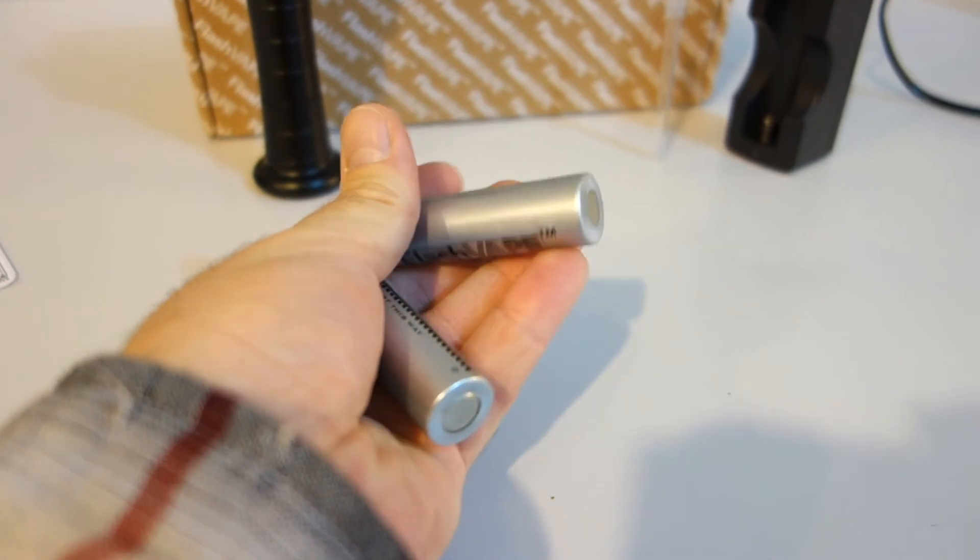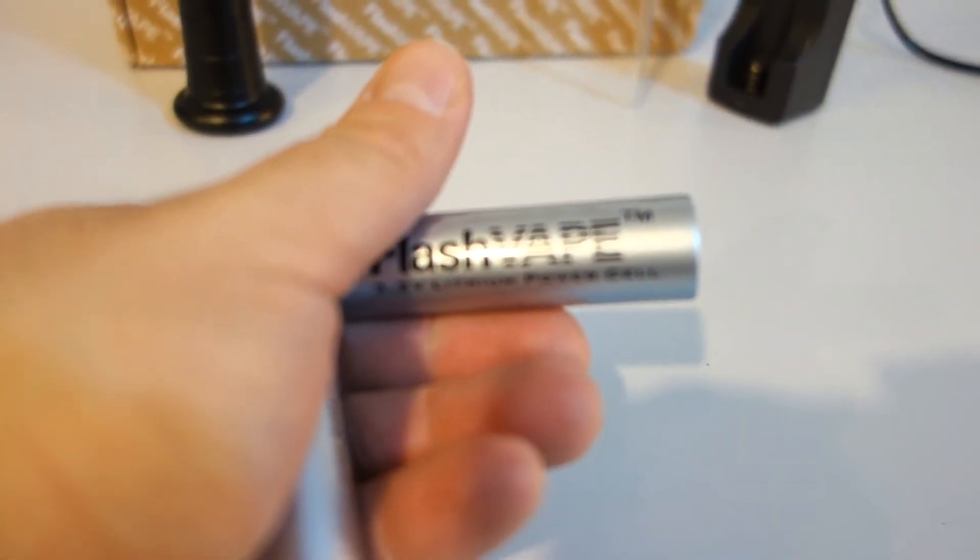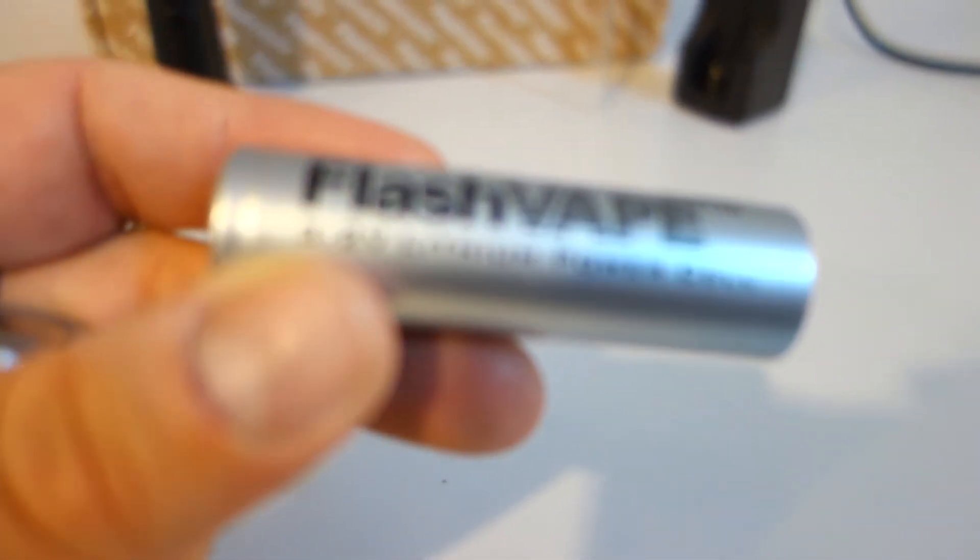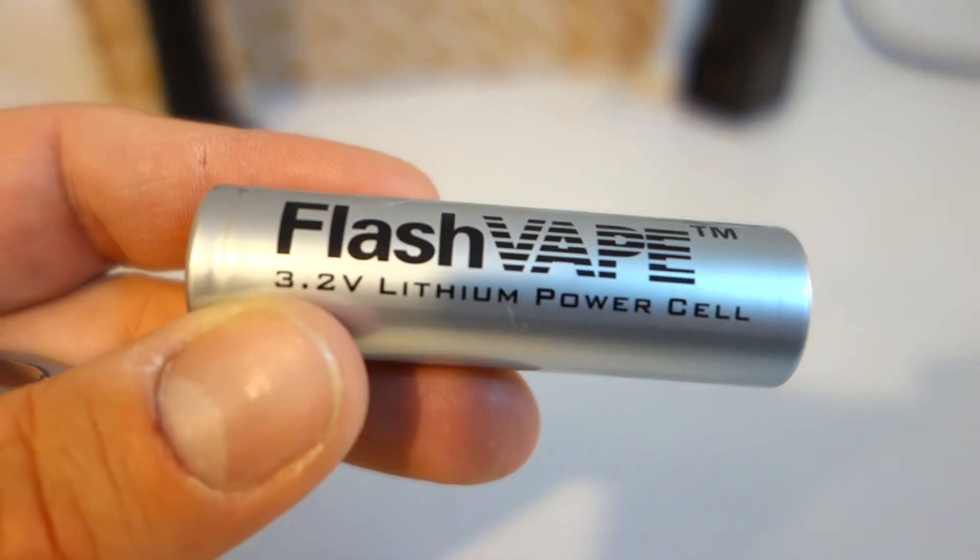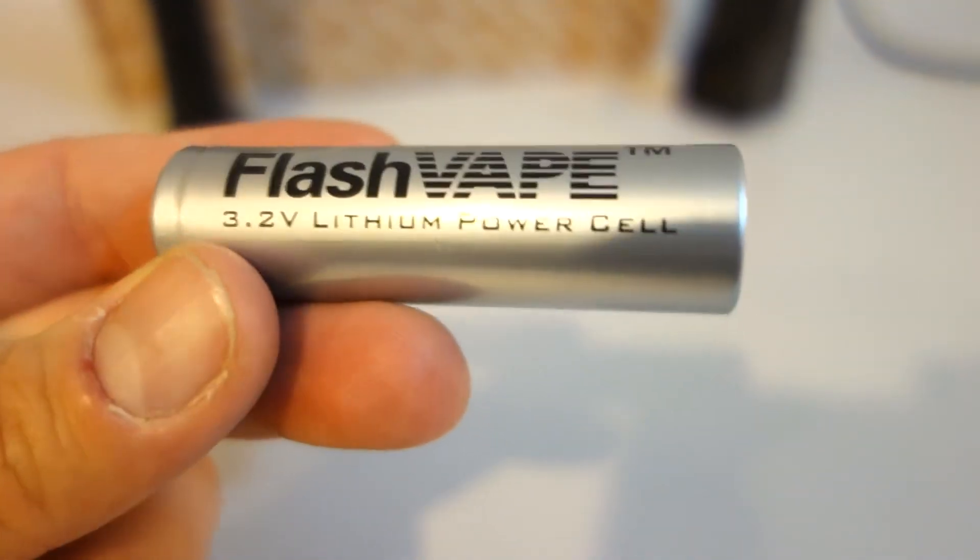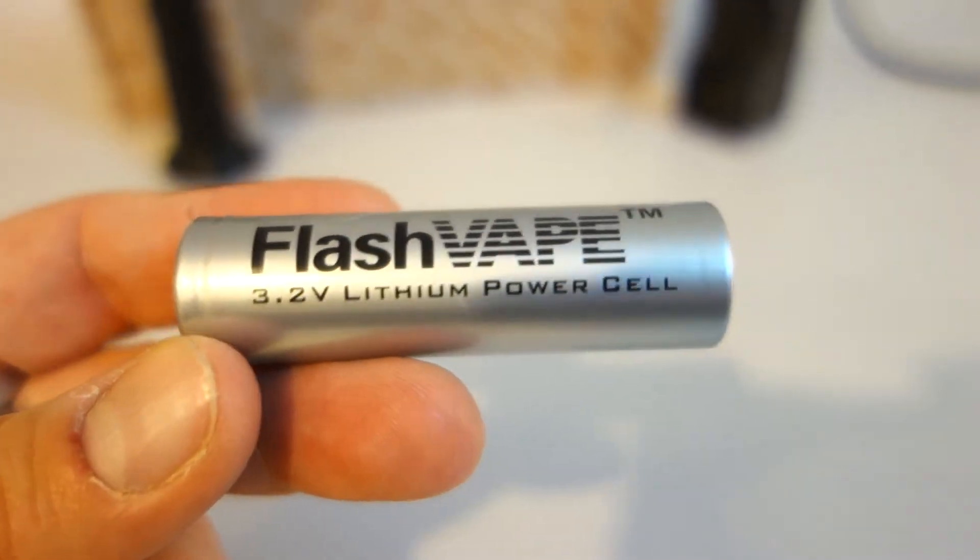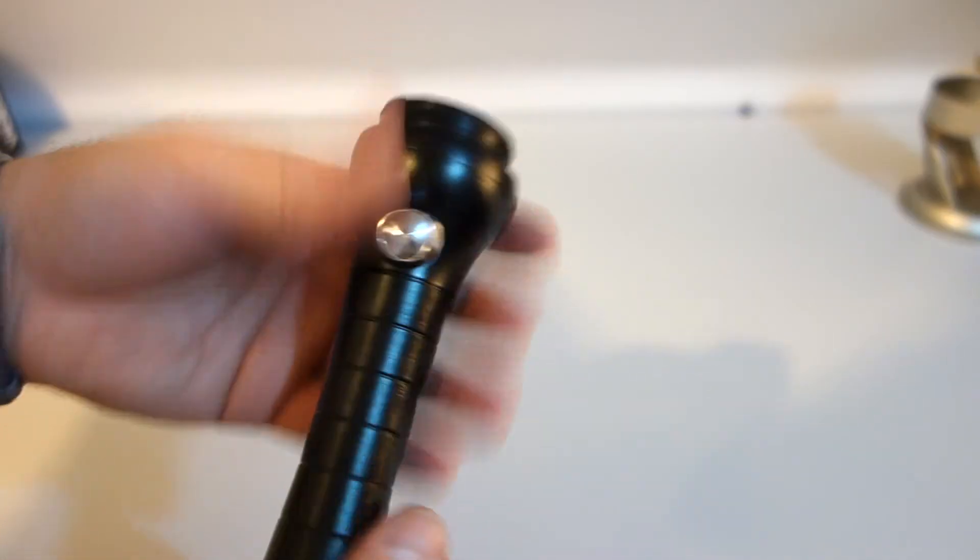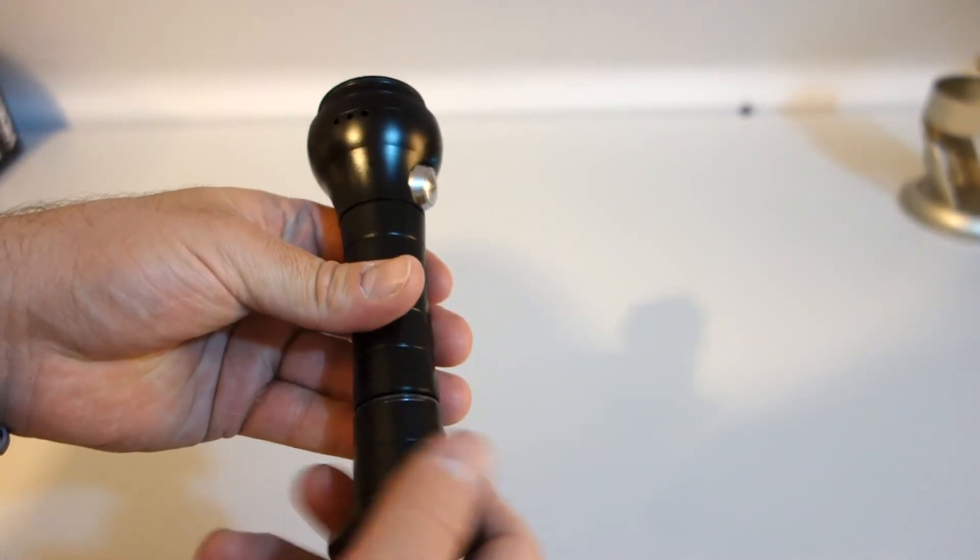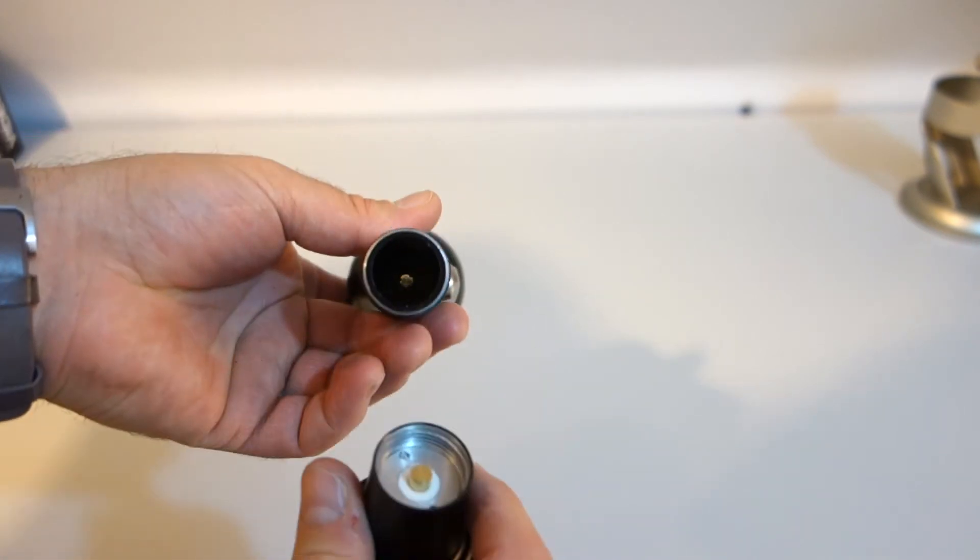The FlashVape ships with two 18650 Li-Ion batteries, which is supposedly safer than most other rechargeable batteries, and is set to get about one hour of use on a full charge. That being said, I was able to get about two 15 minute sessions, so about half an hour to 45 minutes before needing to switch batteries.